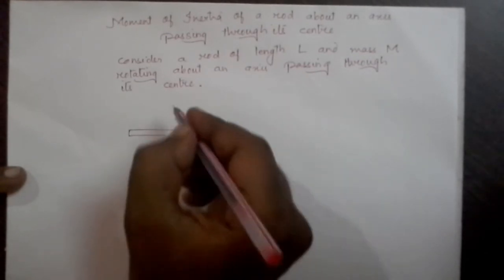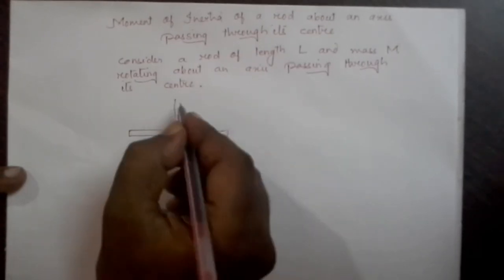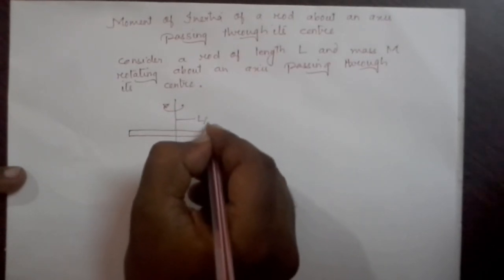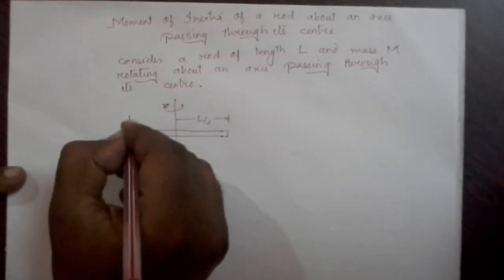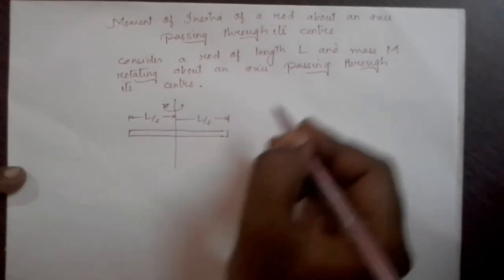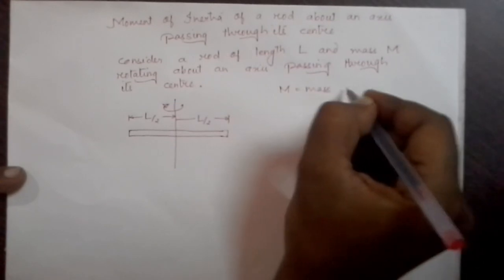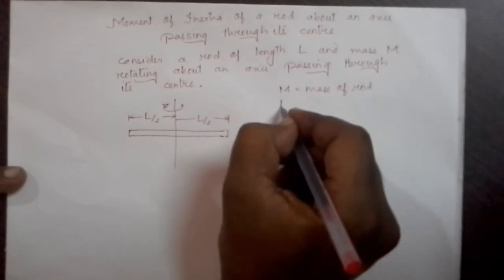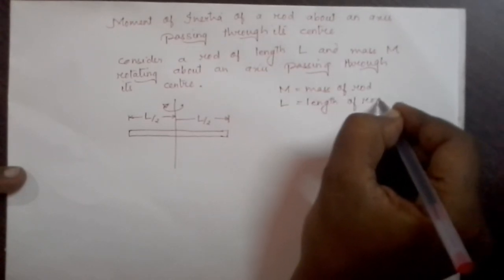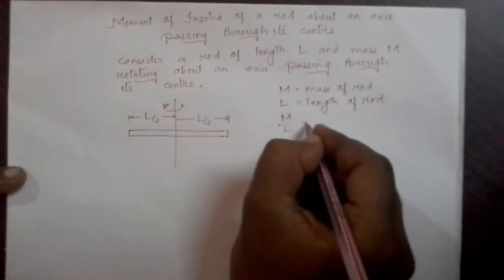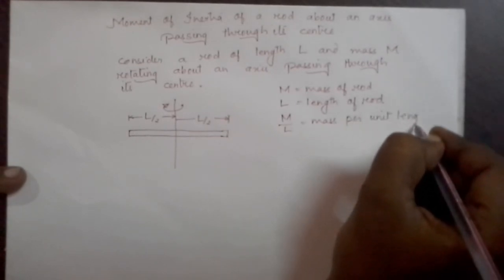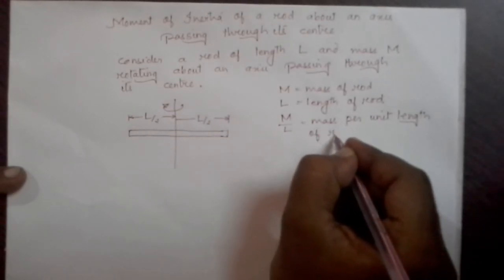So let this be the rod of length L, and this is the axis of rotation. Let this length be L by 2, and this length also be equal to L by 2. Let M equal the mass of the rod, L be the length of the rod, and M by L equal the mass per unit length of the rod.